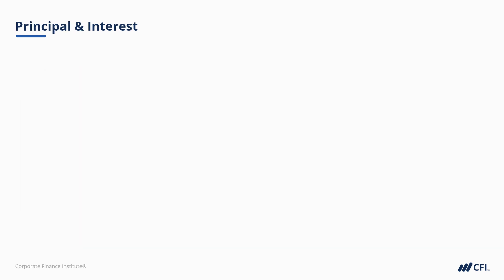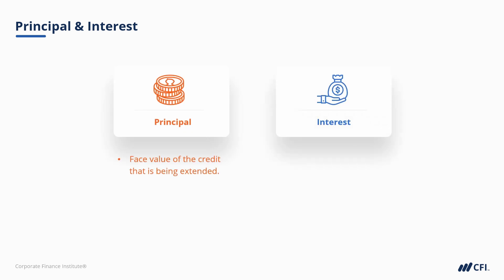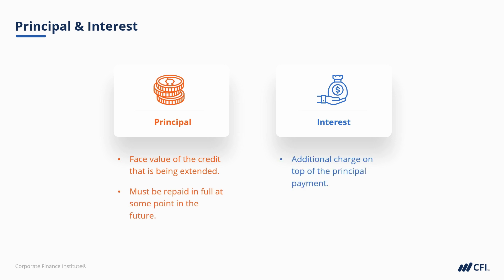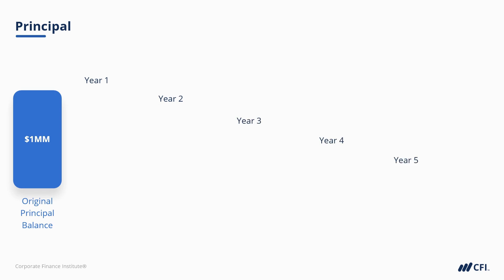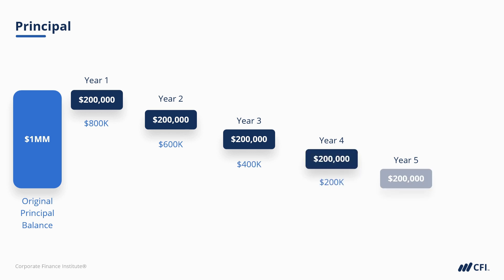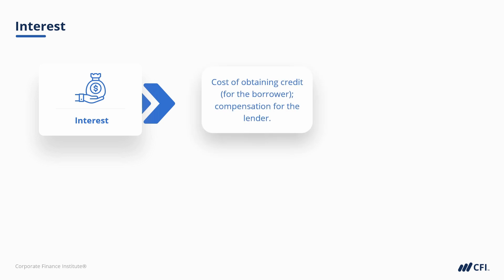Loan payments consist of two parts: principal and interest. Principal is the face value of the credit that's being extended, and which must be repaid in full at some point. Interest is the additional charge on top of the principal amount that's paid as compensation to the lender for providing the capital. For example, if a $1 million credit facility was extended to a business on a five-year amortization, assuming an equal amortizing loan, then $200,000 in principal would be due each of the five years until the remaining balance was zero.